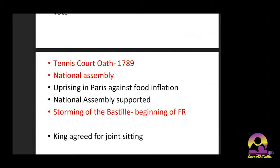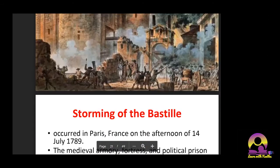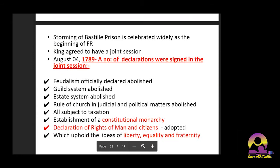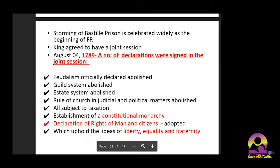The clash finally resulted in the Storming of the Bastille. The Bastille was a prison and the center of royal power in Paris — anything happening to it was seen as a major blow to the monarchy. The Storming of the Bastille occurred on the afternoon of 14 July 1789. The medieval fortress and political prison represented royal authority in the center of Paris. It had only seven inmates, but it was seen as a very big hit on royal authority and is celebrated widely as the beginning of the French Revolution. After the storming, the king agreed to a joint session.